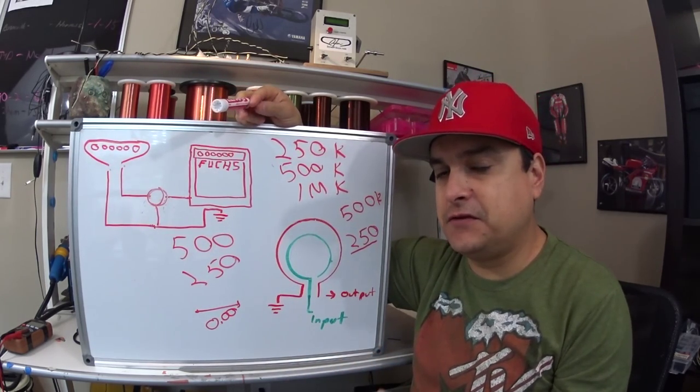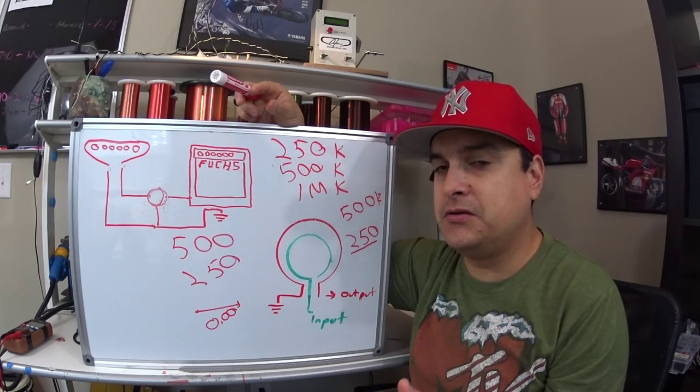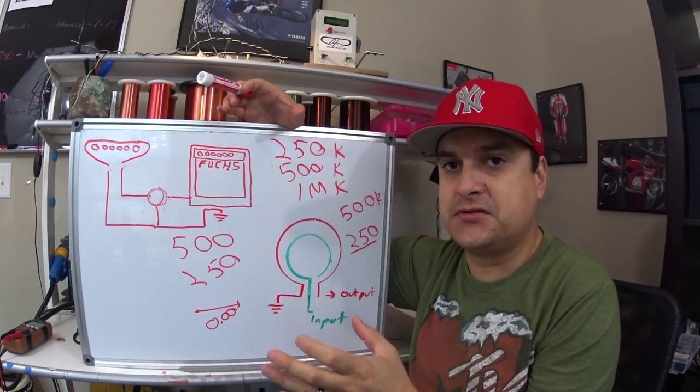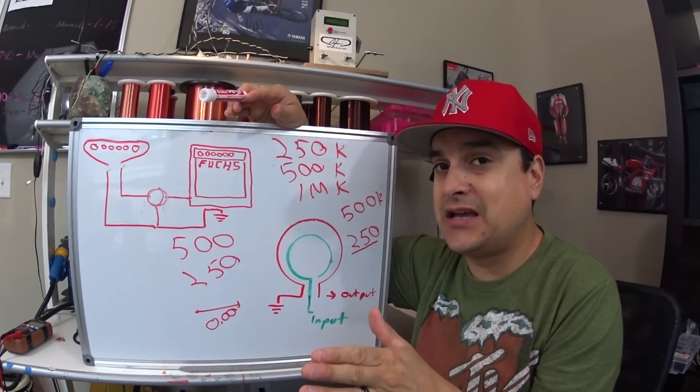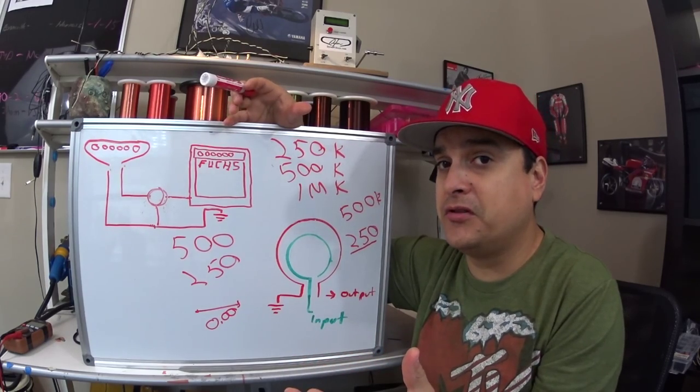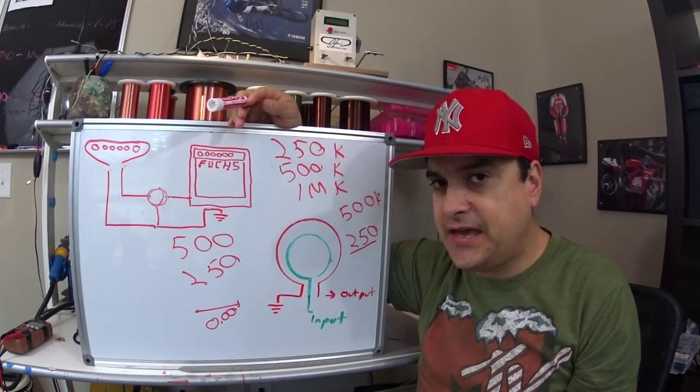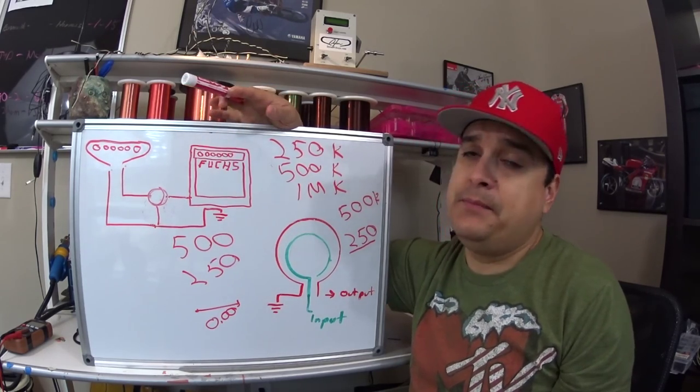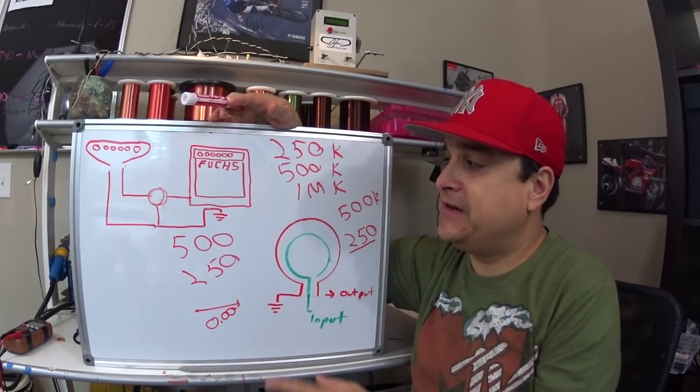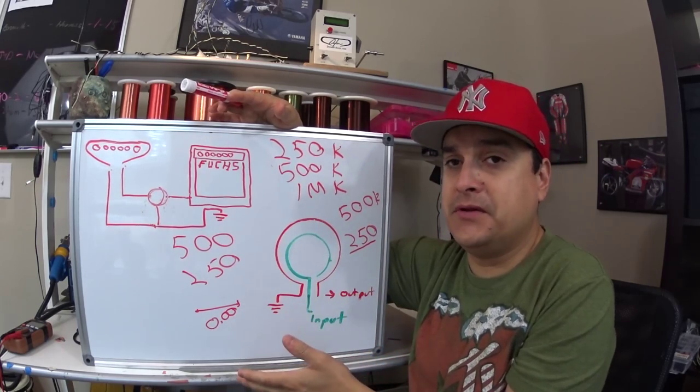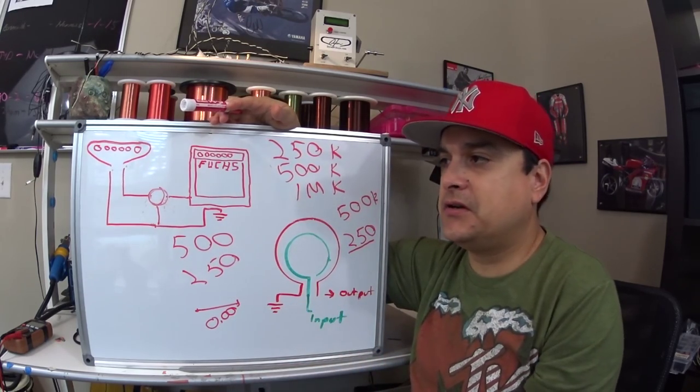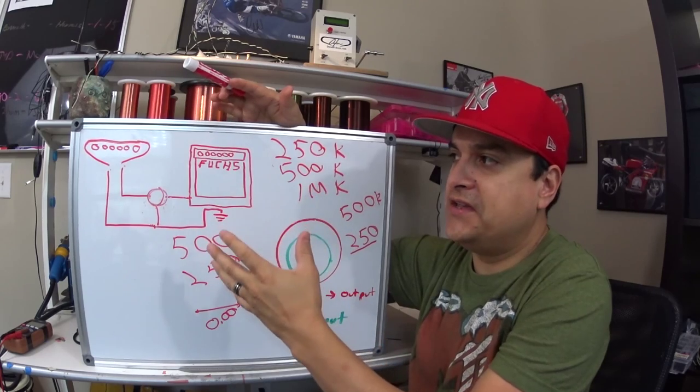Humbuckers, because of the way the coils are structured, you have a little less highs. So you want to let some more of those go, so you have a higher resistance pot. Now, is that the rule? I personally don't think that's the rule. That is the common way, yes.